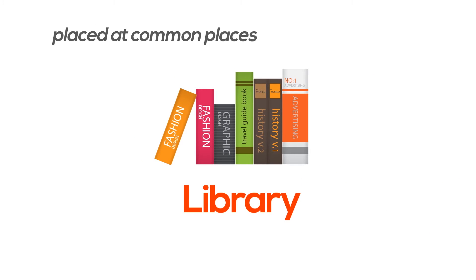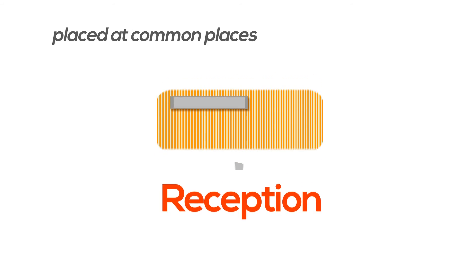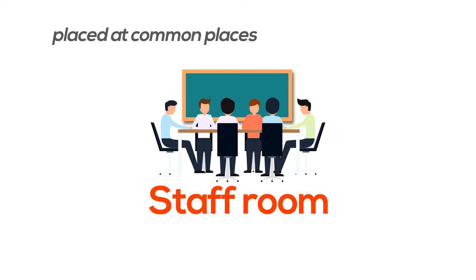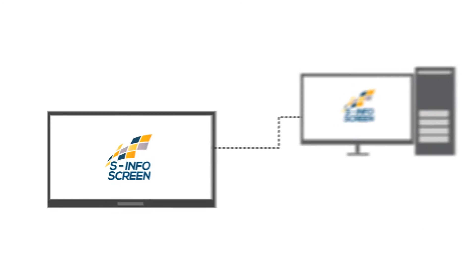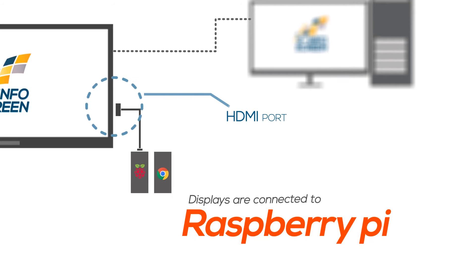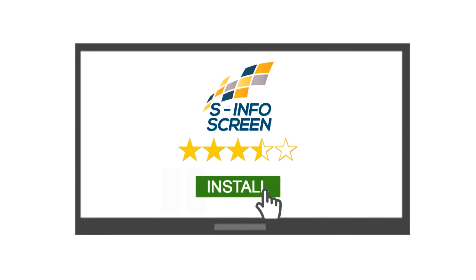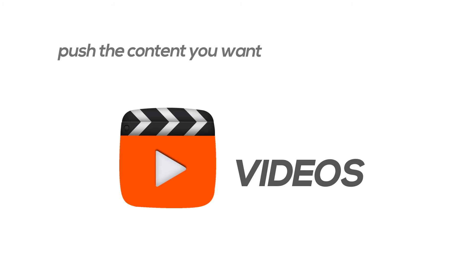Placed at common places, this network of displays can be controlled from a central computer. Each display is connected to a Raspberry Pi or a Google Chromecast. These smart displays are installed with the Pi Signage app,